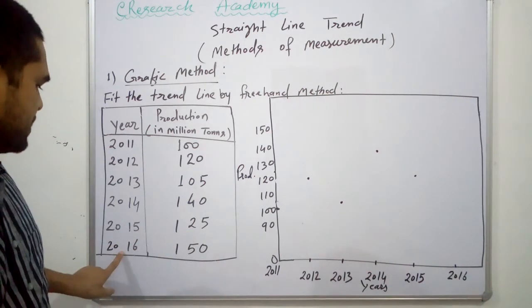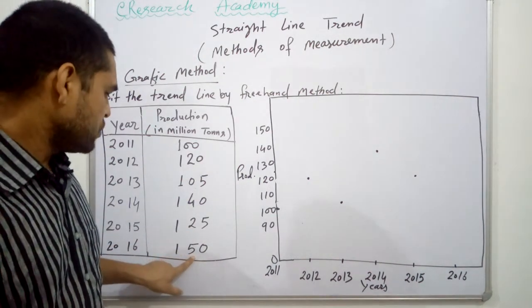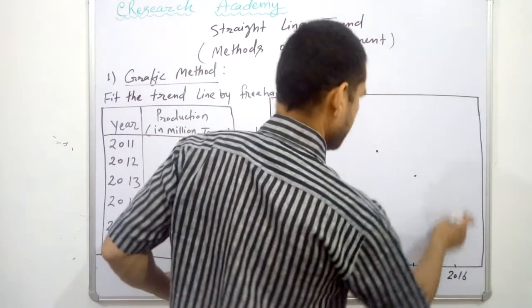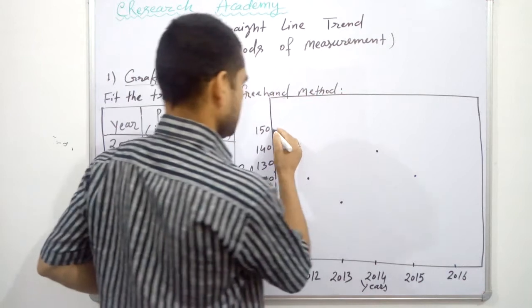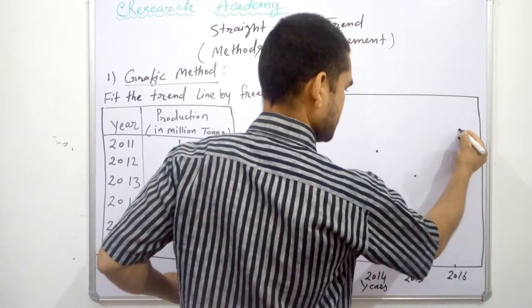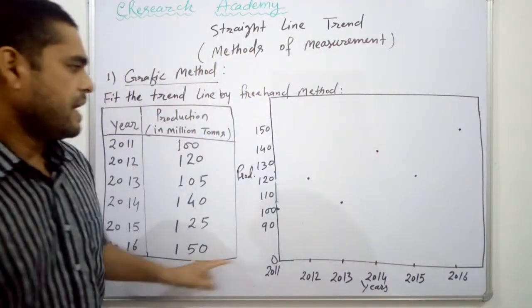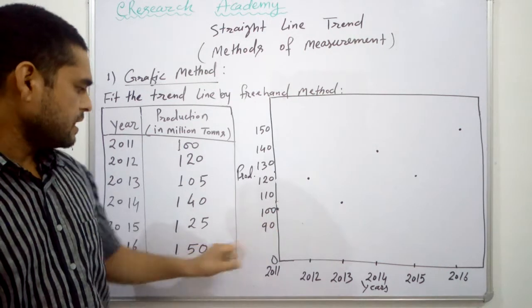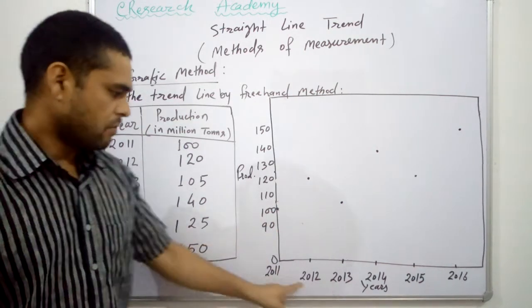Finally, in 2016, our production goes up and it is 150, 150 tons. So this is over 150 and this is over 2016. So now we have marked or plotted all the points presenting this production for these years.